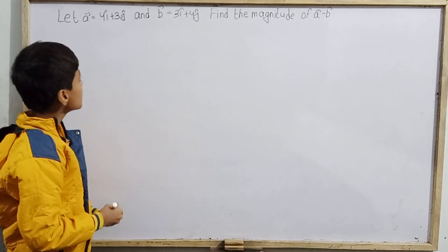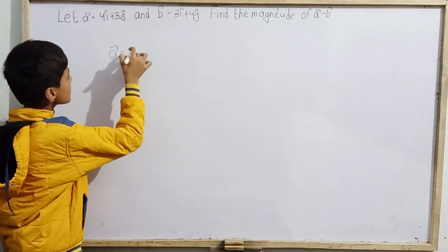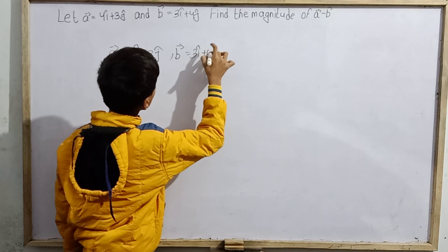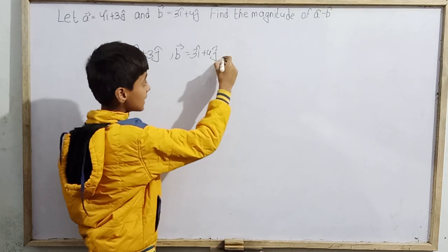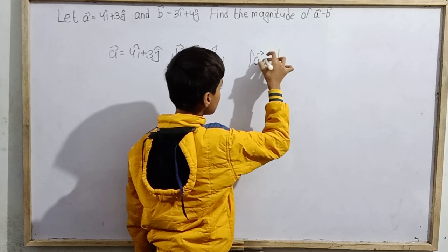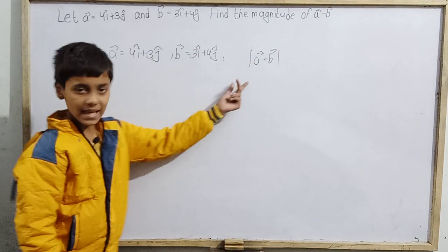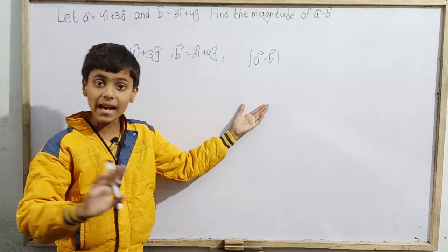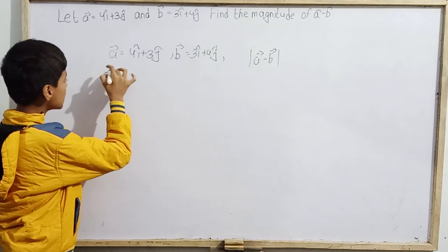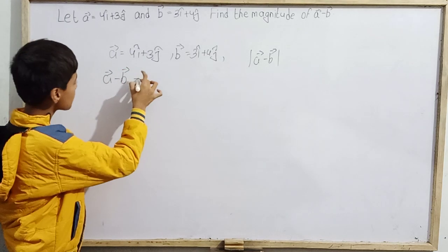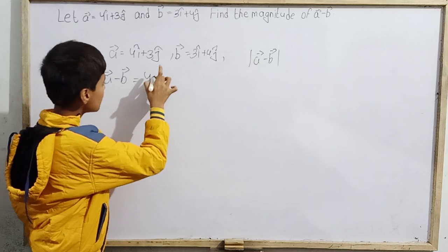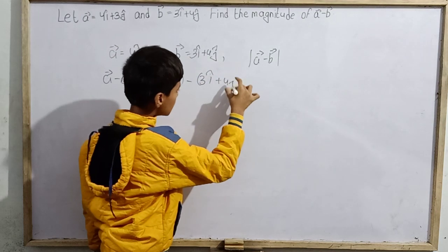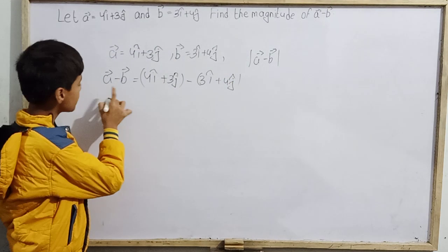So let's note it down. Vector A is 4i cap plus 3j cap, and vector B is 3i cap plus 4j cap. We have to calculate the magnitude, which is the mod of vector A minus vector B. First, calculate vector A minus vector B: that is 4i cap plus 3j cap, minus the quantity 3i cap plus 4j cap.